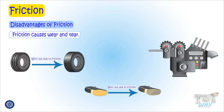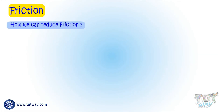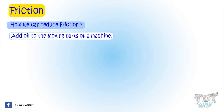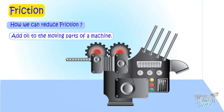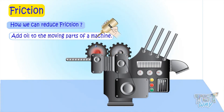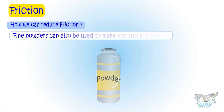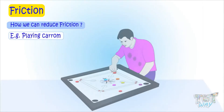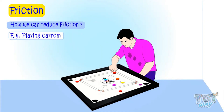Now let's learn how we can reduce friction where we do not need it. First of all, the moving parts of machines are oiled or greased to reduce the wear and tear caused by friction. Fine powders can also be used to make the surface smooth. For example, before playing carrom on the board, we sprinkle talcum powder on the board to make the surface smooth.